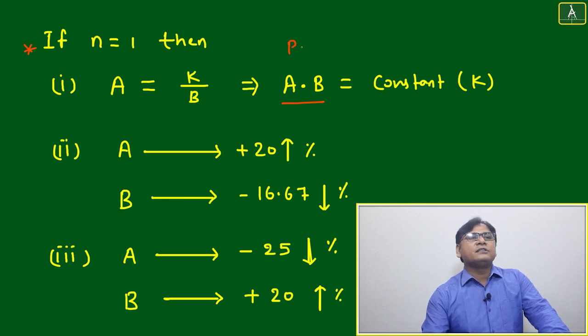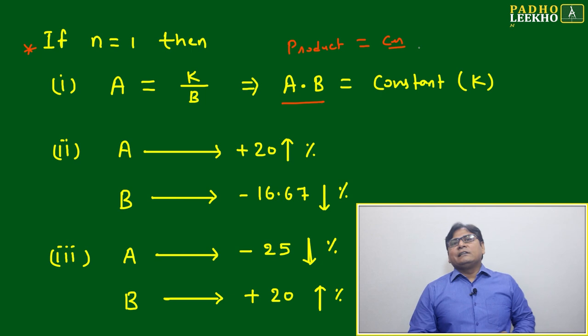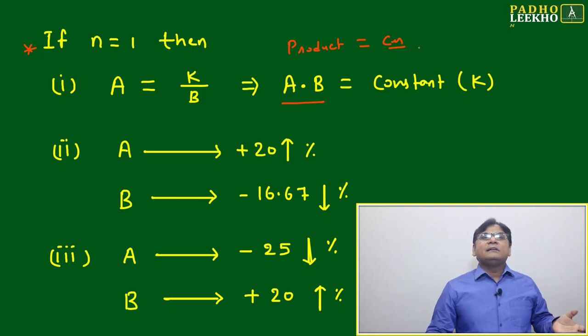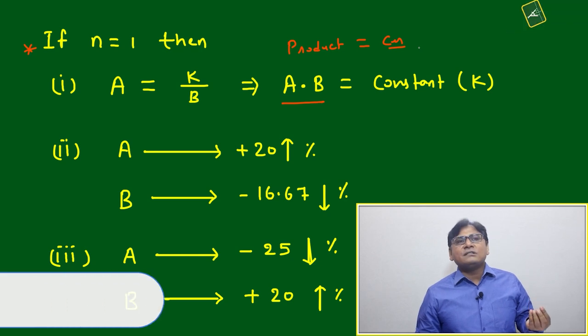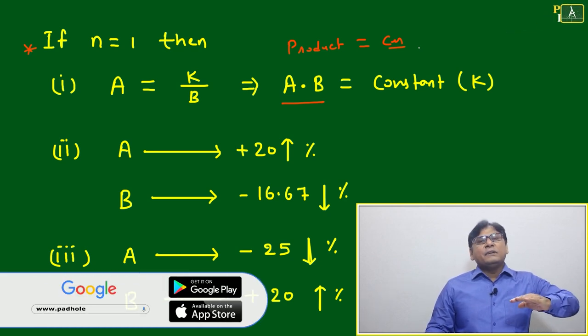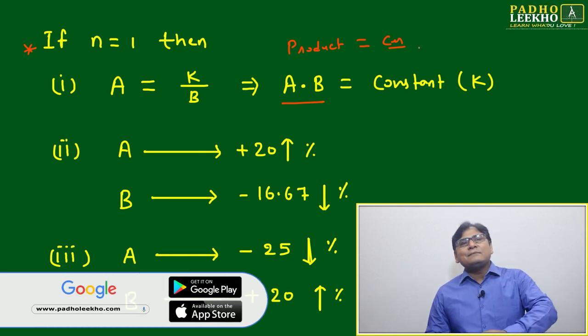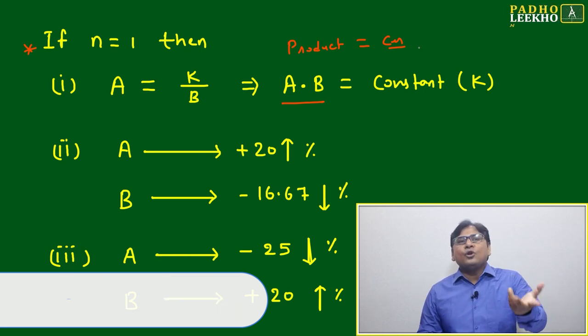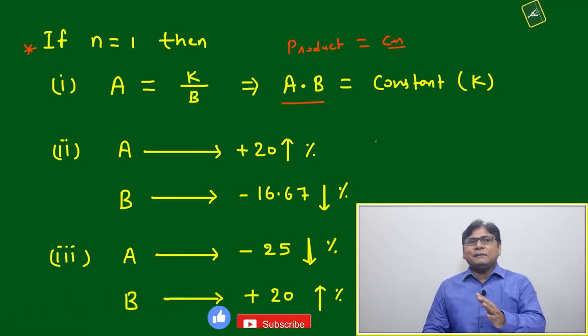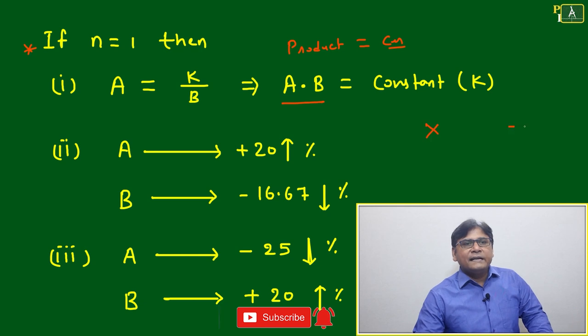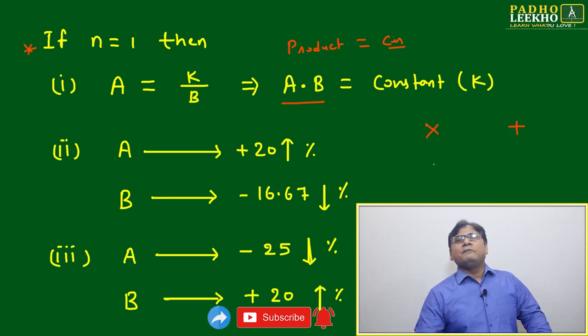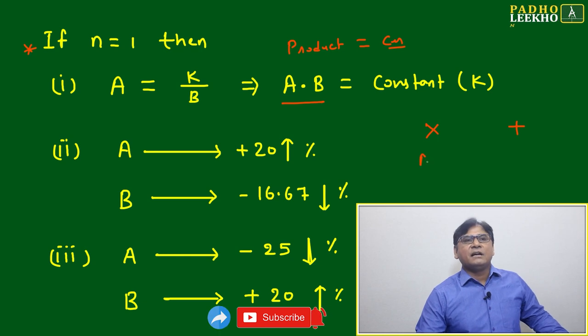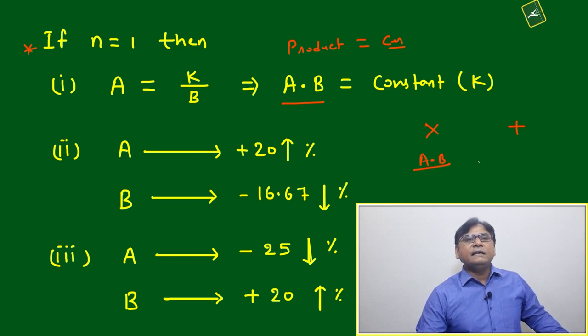If product is constant, then one more interesting concept coming out: if any two variables' product is constant, then it relates to minima and maxima type of questions. Will be framed like A into B equal to constant, then when A plus B. Again I told this is multiplication, this is your division. These two will play very good role during your entire quant preparation.